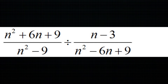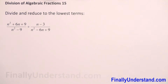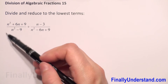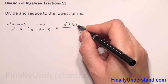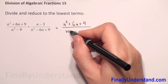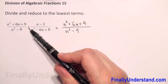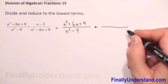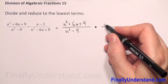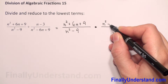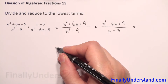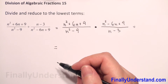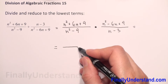We have division of algebraic fractions. We have to use the same rule as for division of fractions — we copy the first algebraic fraction, which is n squared plus 6n plus 9 over n squared minus 9. Then we change the division sign to multiplication and flip the second algebraic fraction, so the denominator goes to the numerator: n squared minus 6n plus 9 over n minus 3.